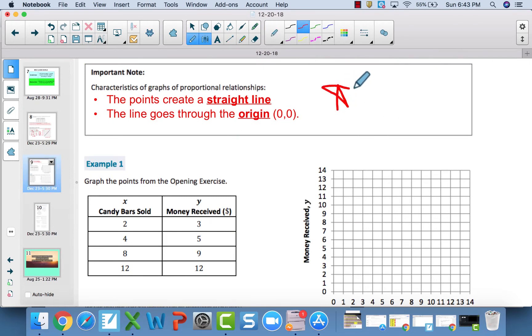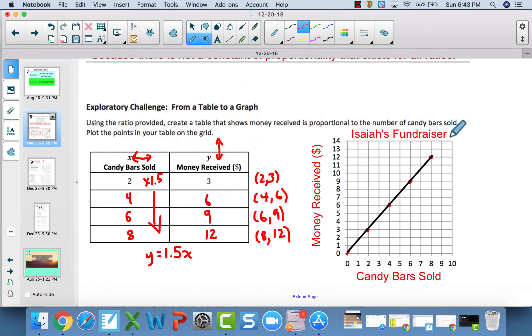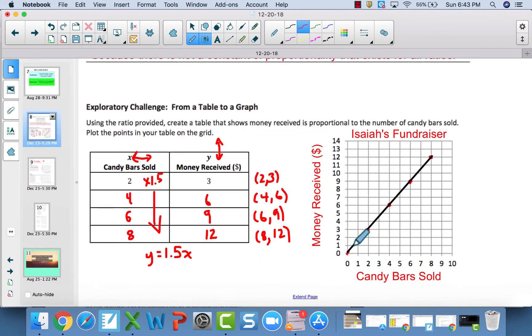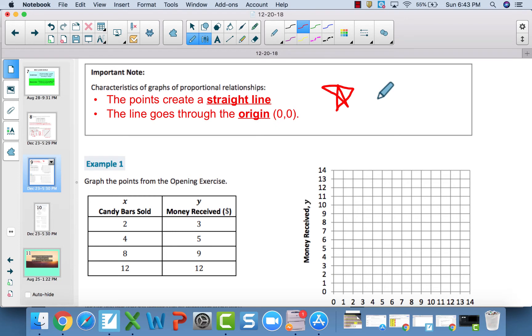This is a very important note. You need to know this for this year, next year, and any math or real-life situation heading forward. Proportional relationships, when you graph them, create a straight line. The points line up in a straight line, and that line goes through what's called the origin—the 0, 0 point. Those two factors make a proportional relationship. If it is a straight line that goes through the origin, it is proportional.